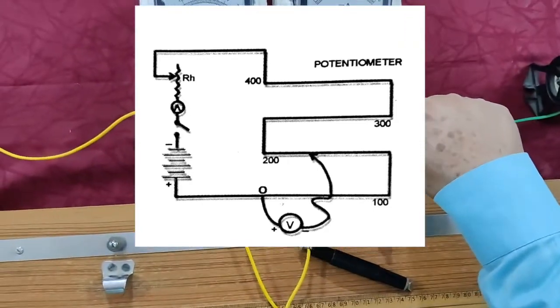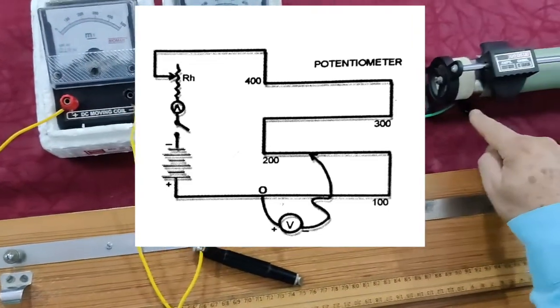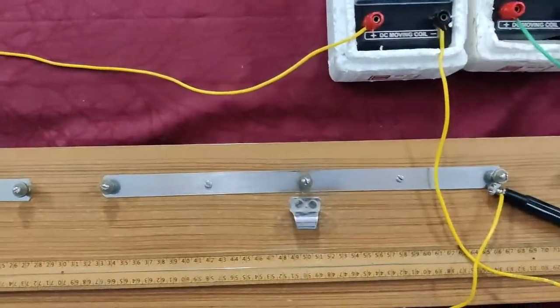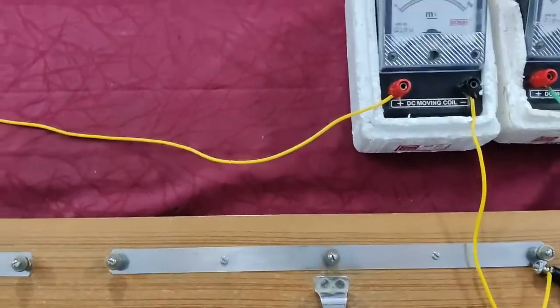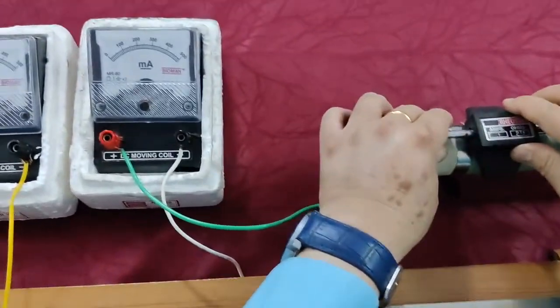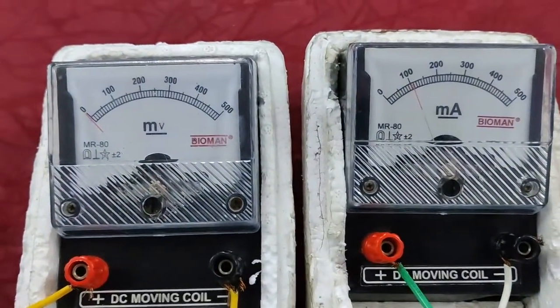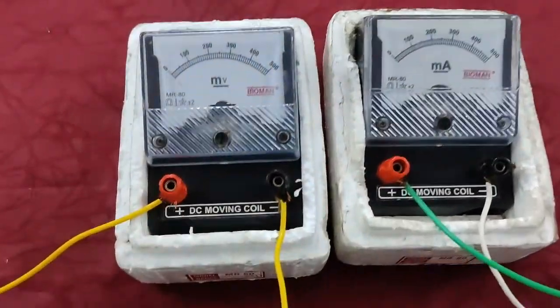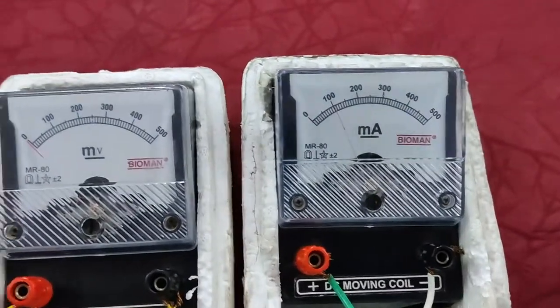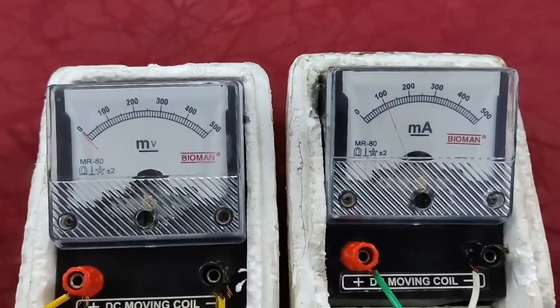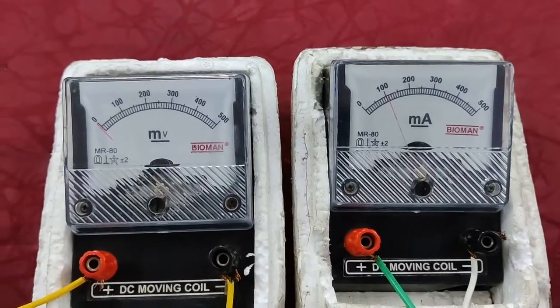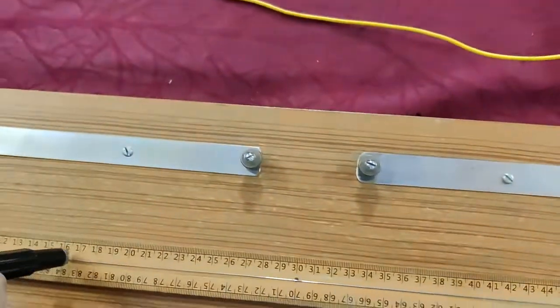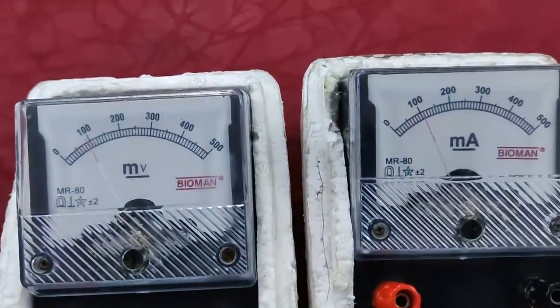Through the plug key to milliammeter, milliammeter positive to rheostat, rheostat to point B. So circuit is completed. When you close the key, current flows through the circuit. Suppose let us fix the value of current. The current value we have now fixed, let's say 100 milliampere. The principle of potentiometer is when a constant current flows through a wire of uniform cross section, the potential drop across the wire is directly proportional to its length.